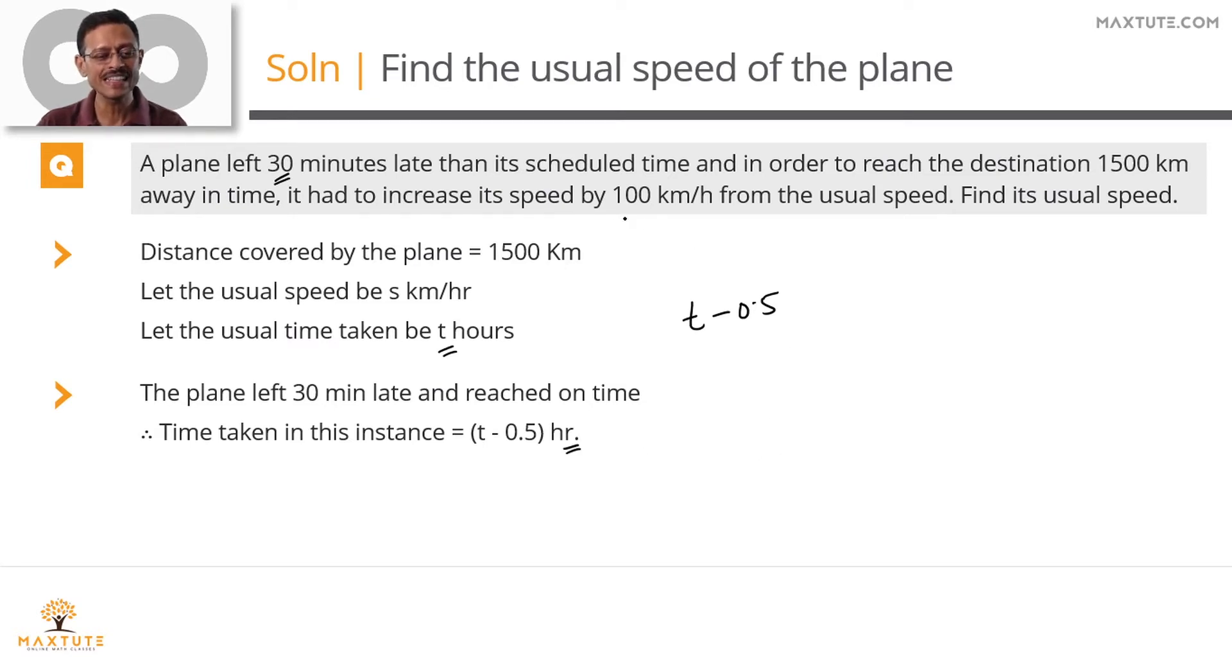How did it manage it? It increased its speed by 100 kilometers per hour. Usual speed is s. This time the speed has gone up by 100. So speed in this instance is equal to s plus 100 kilometers per hour.